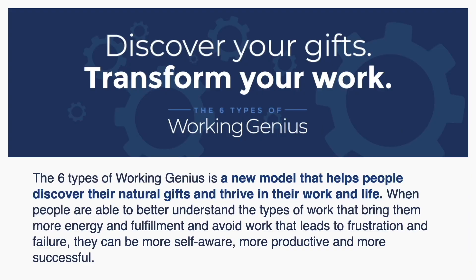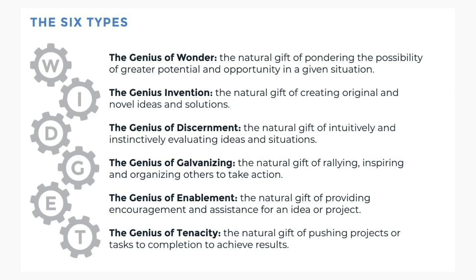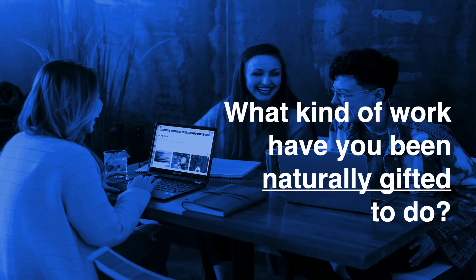Now it's time for the main event. We're going to take a look at the model that we're comparing all these other models to, and that is the six types of Working Genius. This is a new model that helps people discover their natural gifts and thrive in their work and life. There are six types: the genius of wonder, the genius of invention, the genius of discernment, galvanizing, enablement, and tenacity.